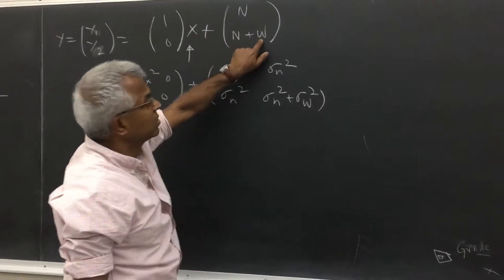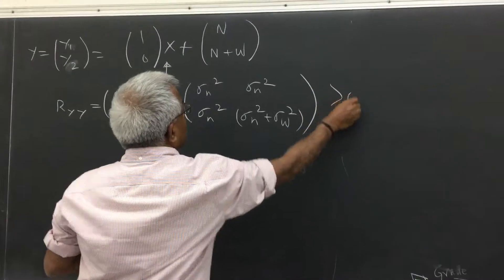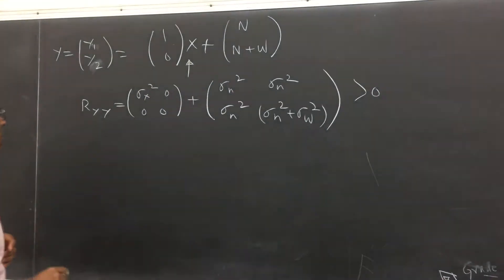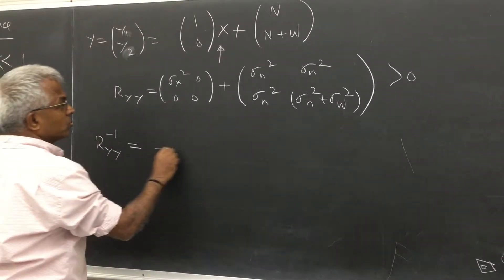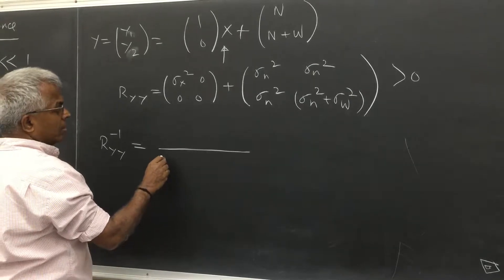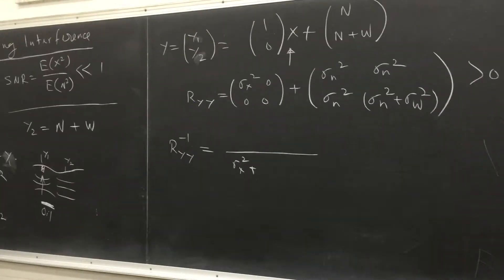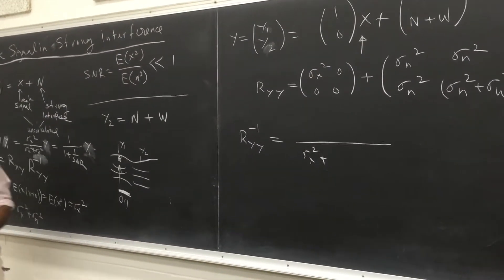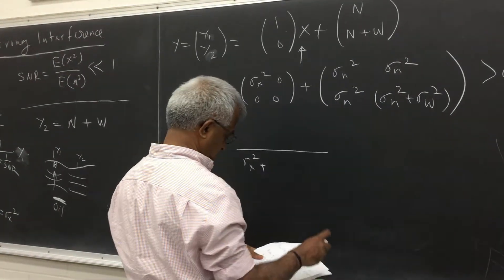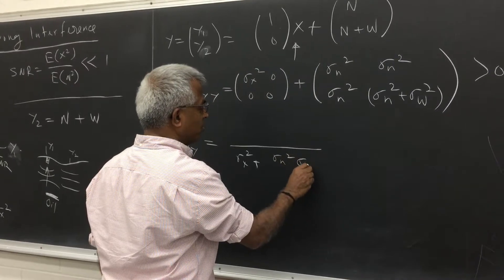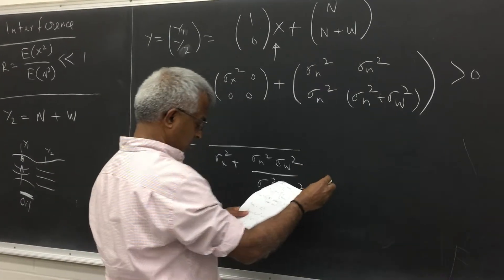This assumes that the noise and the interference are uncorrelated with each other. We then compute Ryy inverse. Working out the mathematics, it turns out to be of the form: sigma x squared plus the relevant noise terms inverted. If you work out the mathematics, it will turn out to be this form.